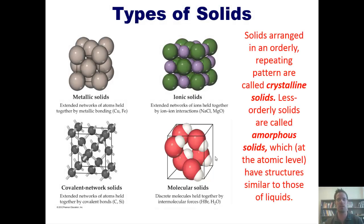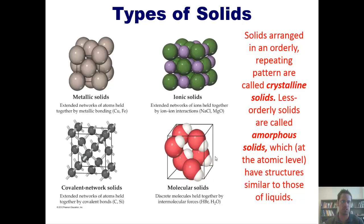Solids arranged in an orderly repeated pattern are called crystalline solids. Less orderly solids are called amorphous solids, which at the atomic level have structures similar to those of liquids.